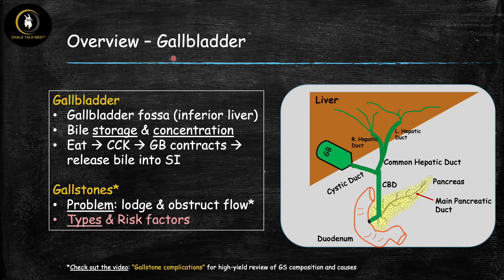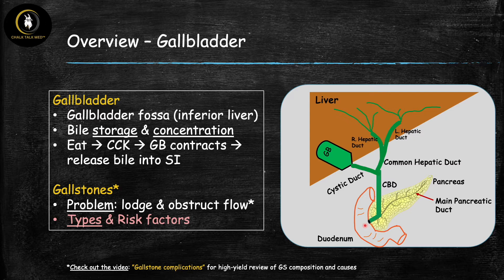Now let's talk about the gallbladder. The gallbladder is an important organ sitting on the inferior surface of the liver in the right upper quadrant of the abdomen. It has two important functions related to bile: storage and concentration. Once we eat, a hormone called cholecystokinin (CCK) is released, causing the gallbladder to contract and release bile into the small intestines, where it emulsifies the dietary lipids we just ingested.